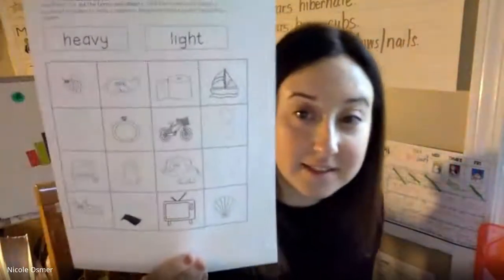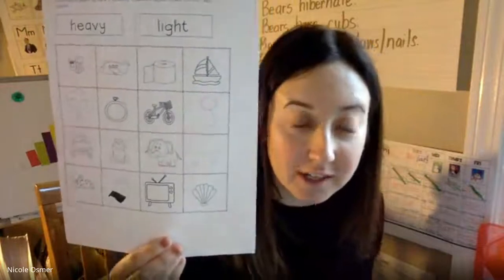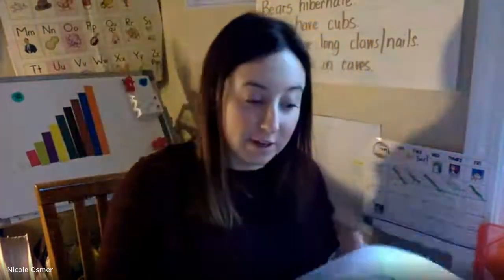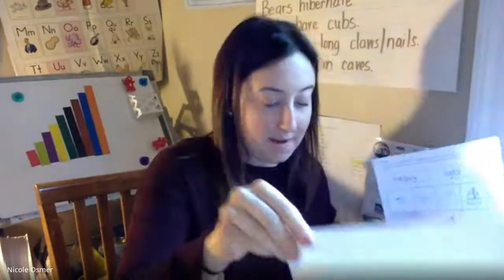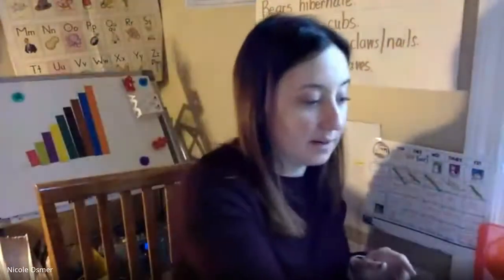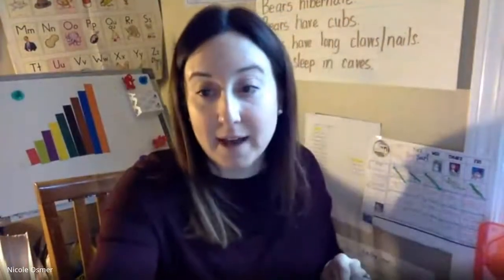Hi boys and girls, okay for math today we're going to do the heavy light sort. It looks like this. I'm going to show you how to get started and you can glue it in your reading journal or if you have just a plain piece of paper that's what I'm going to use. I'm going to fold my paper in half.